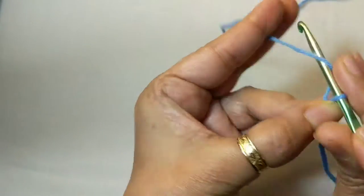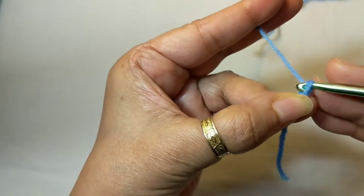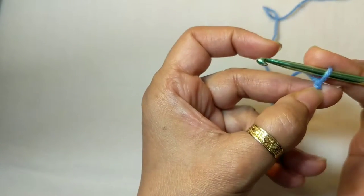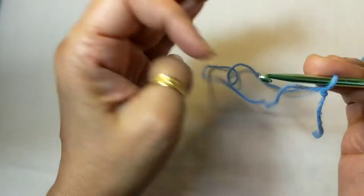Twist and then hold it onto the base of that and then work your first chain. Pull the lower yarn and it tightens, and that's your slip knot done.